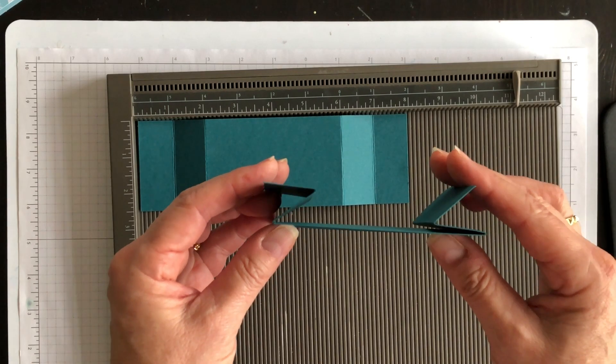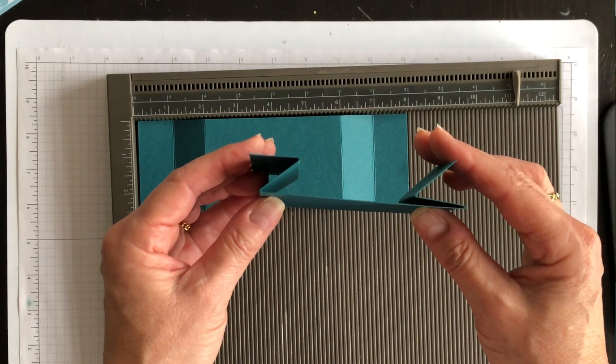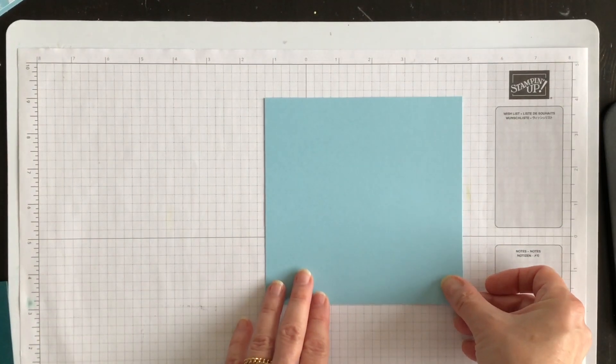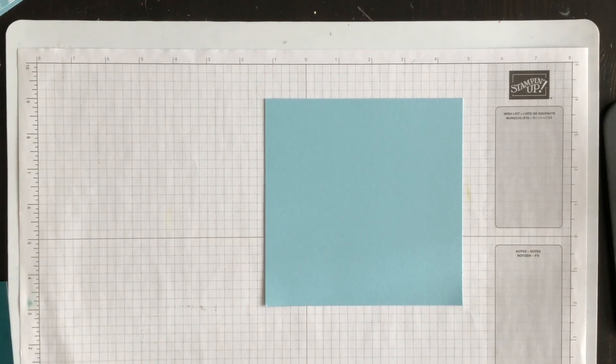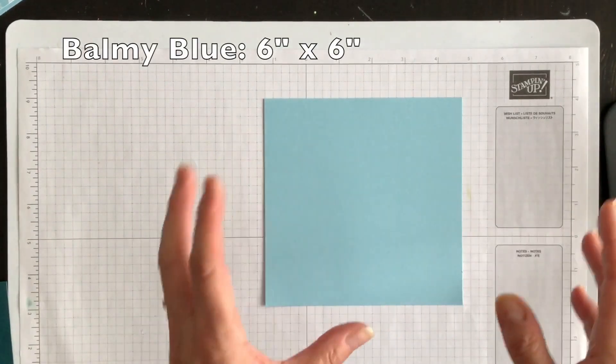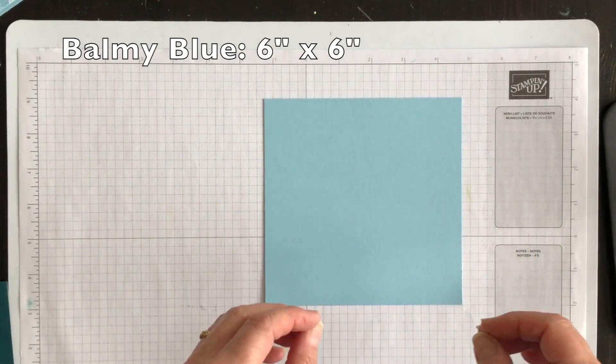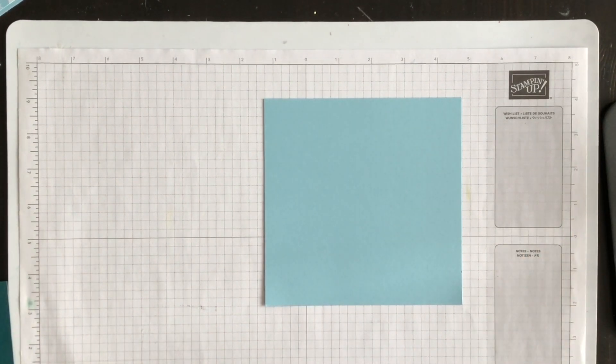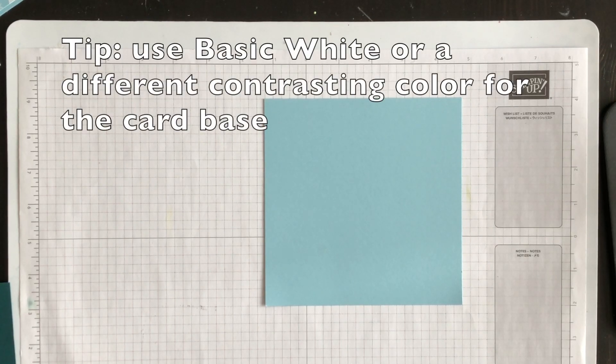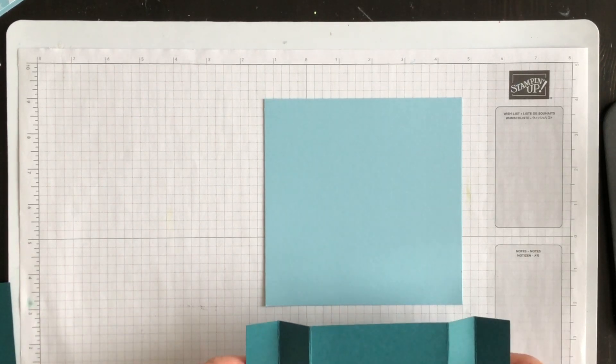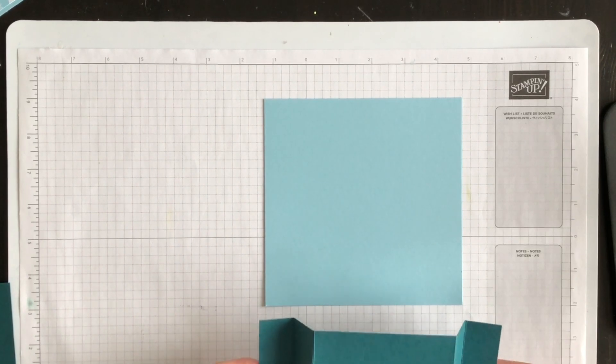So now let's adhere these to our card base. Now my card base is going to be six by six this week. So it does create a larger card, but it's so stunning. And let me reassure you that you can find six by six envelopes. So you can purchase them either online or go to your local stationery store, and I'm sure they'll have them there as well.